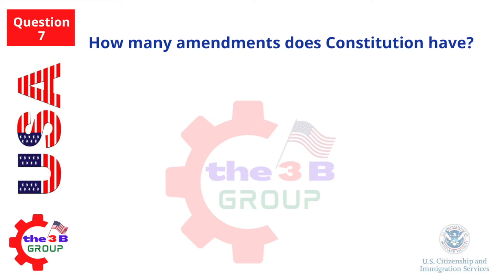How many amendments does the Constitution have? 27.